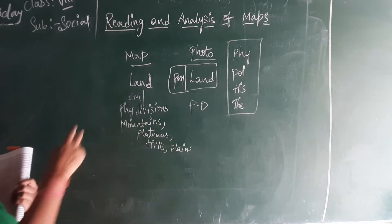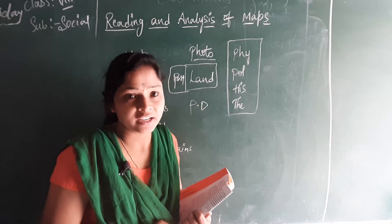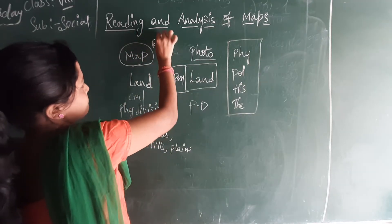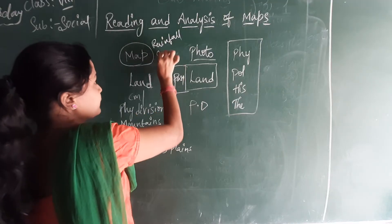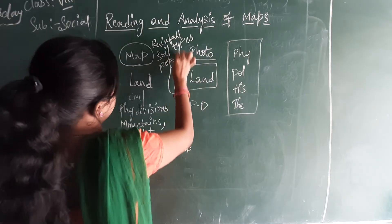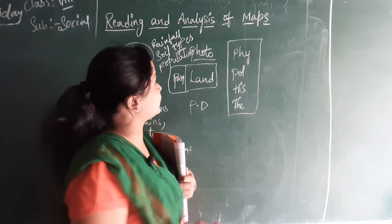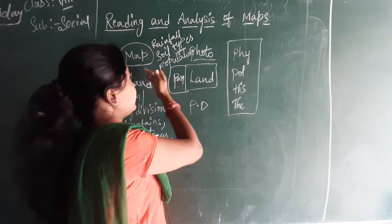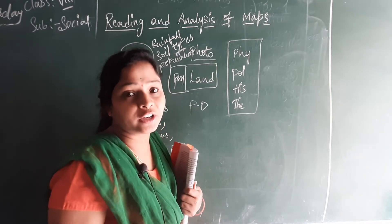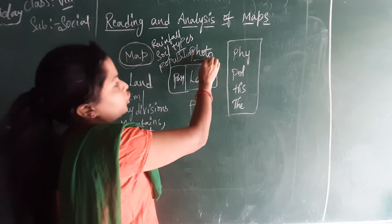In the map you can also see rainfall, temperature, and climatic conditions. By seeing the map we can know the rainfall, soil types, and population. We can see a clear picture of these in the map but not in a photography. And in the map you can see information about people — different religions of people, where they are living, different languages spoken by the people. We can see many different things in the map clearly but not in a photography.